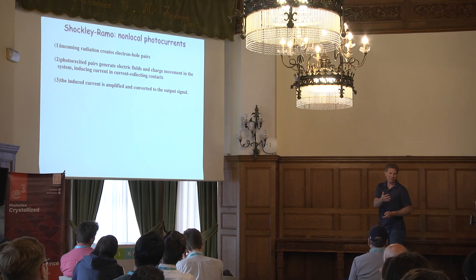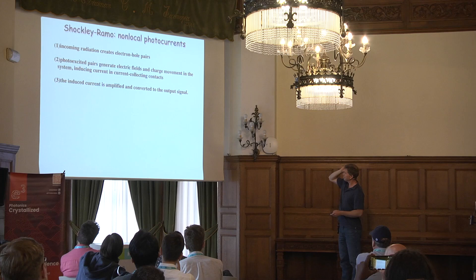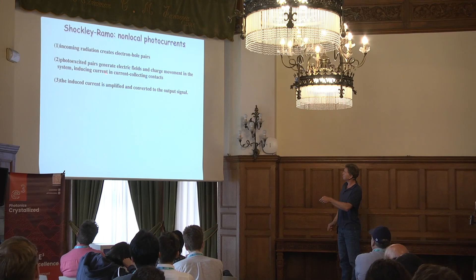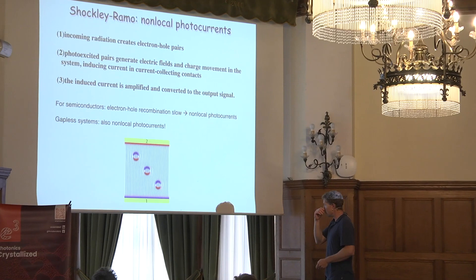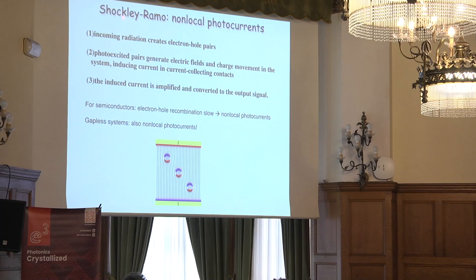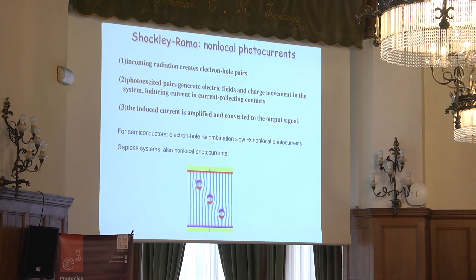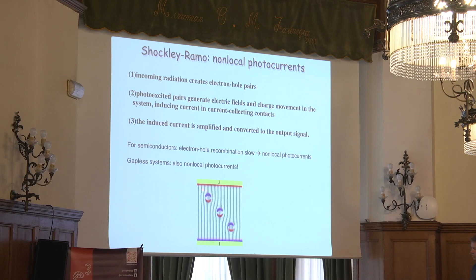Why does this actually work? There are multiple steps in the photocurrent generation mechanism. The mechanism of locally perturbing the system and globally probing it goes all the way back to Shockley, who with Ramo already predicted non-local photocurrents — basically that you locally perturb the system and some of the current lines make it all the way to the contacts. So it's called Shockley-Ramo.